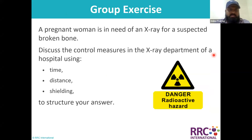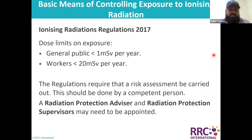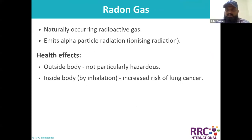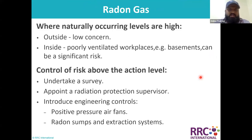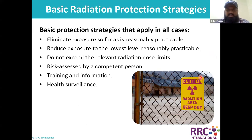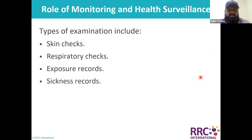After that there was a group exercise, and then we discussed different dose limits on exposure to hazardous radiation. Then there was a type of radiation — basically a gas, radon gas, which contains alpha particles. We discussed how it harms us and how to control it. Then we discussed basic radiation protection strategies applying to all kinds of radiation, and finally moved to health surveillance.